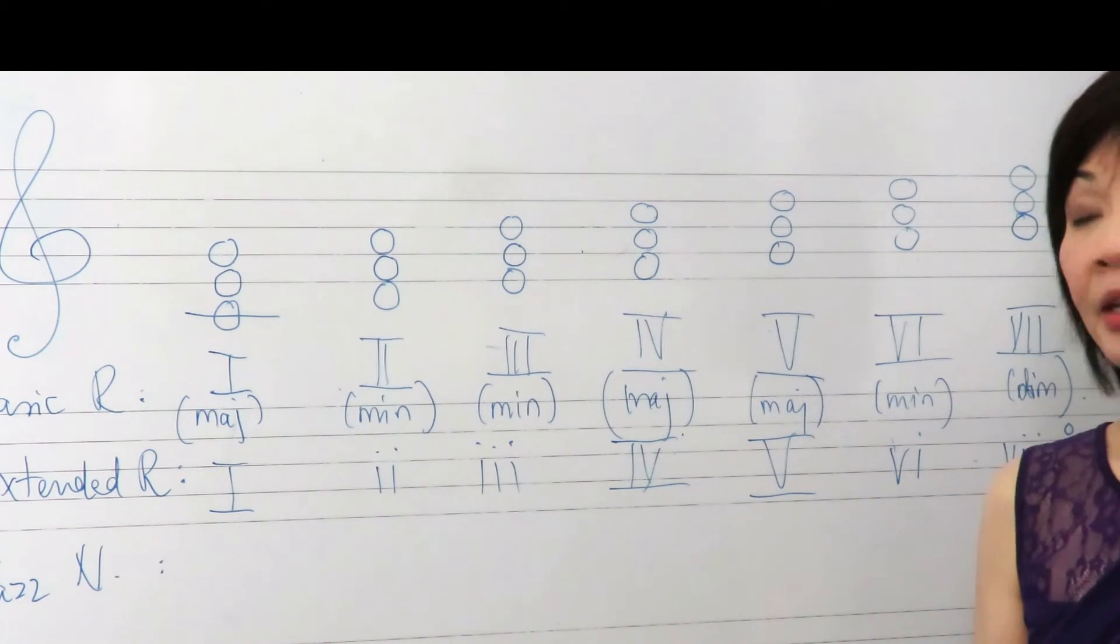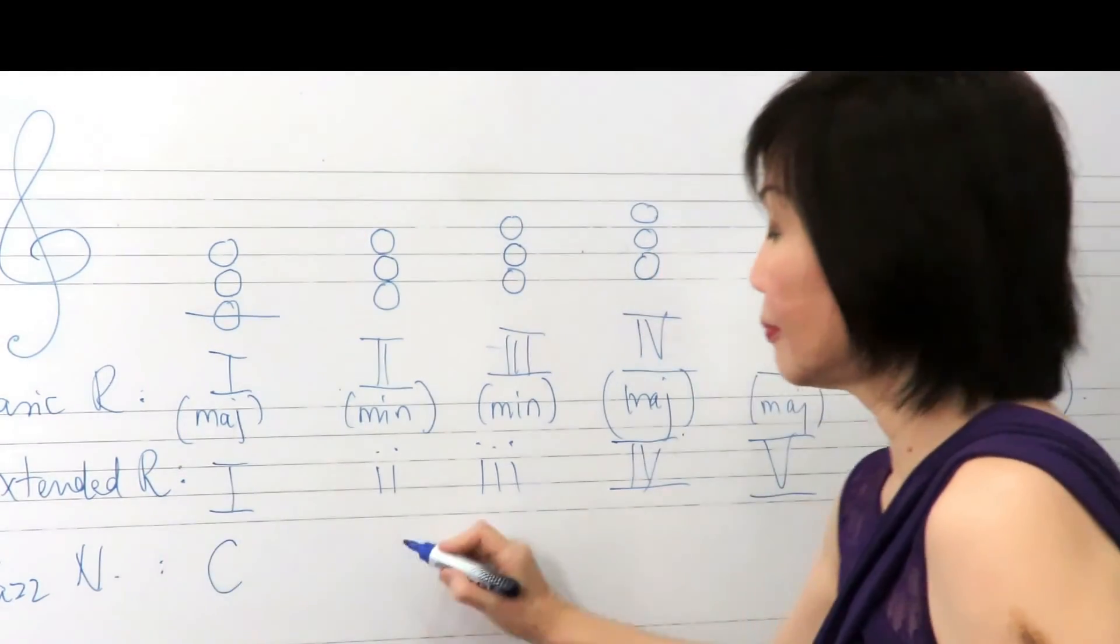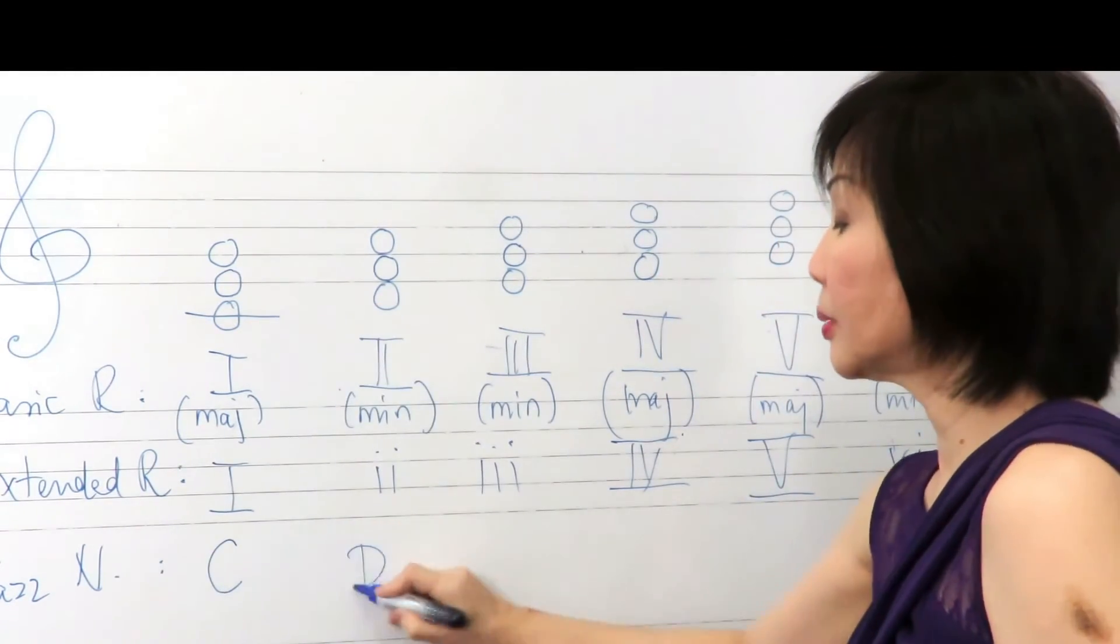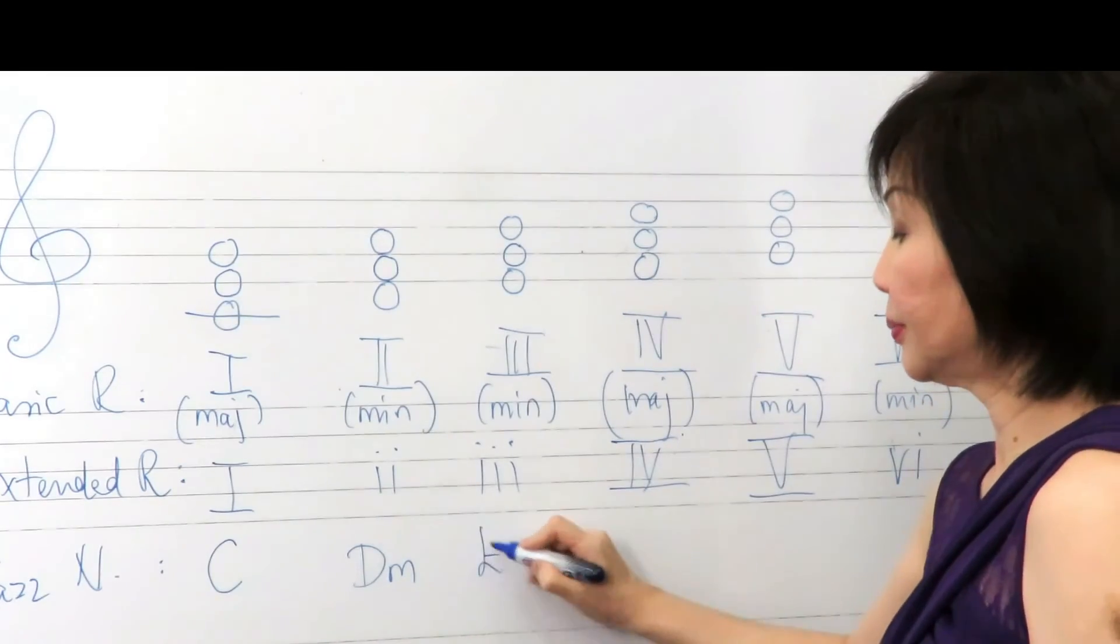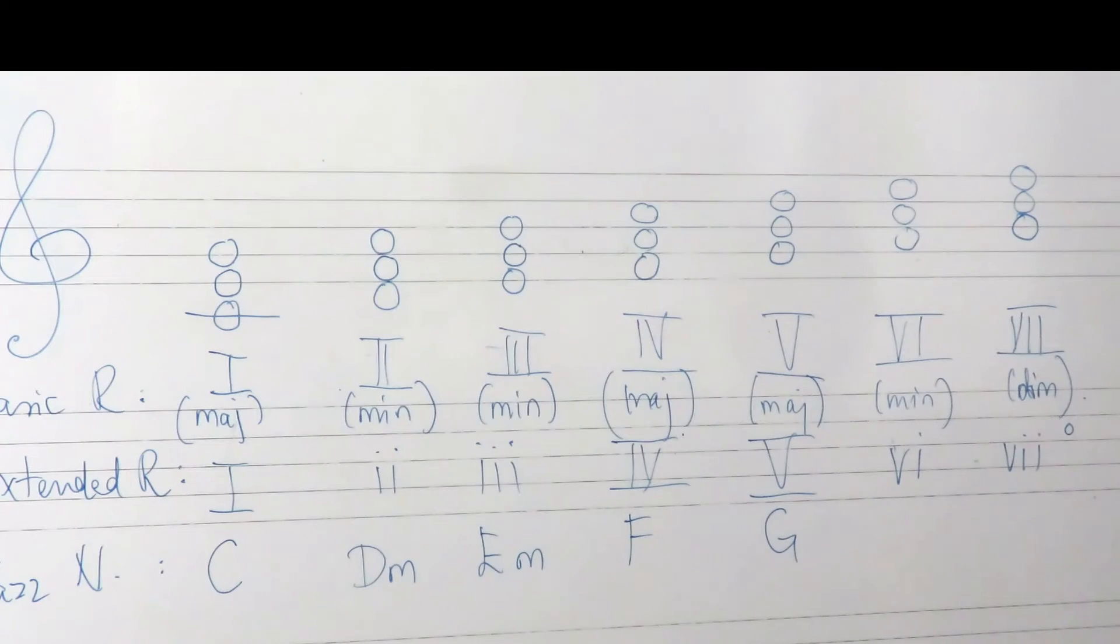For other instruments, they will be more accustomed to seeing the chords written this way: C major triad, D minor, E minor, F major, G major, A minor, and B diminished.